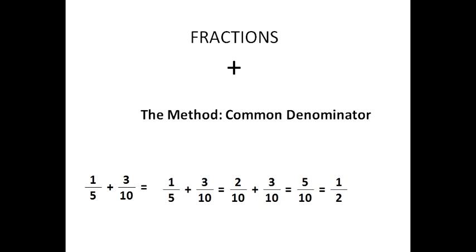Now we have one-fifth plus three-tenths. You could think of this as a common denominator approach. Notice that five times two is ten, so we can multiply one-fifth — both numerator and denominator by two — to get the equivalent fraction two-tenths. Now we have two-tenths plus three-tenths, which is two out of ten plus three out of ten — altogether five out of ten.